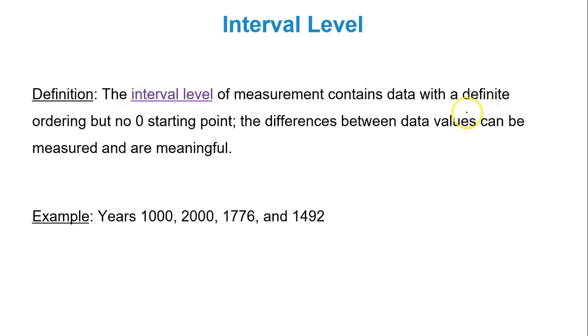Interval level of measurement. You have a definite ordering, but there's no zero starting point. So you could have negative numbers or you could have negative numbers that happen before zero. So the differences between data values can be measured and they are meaningful. So years, for instance, that's an example of an interval level of measurement. So the reason for this is because there's no zero starting point because before our A.D. years we had B.C. We had B.C., so there's no zero starting point. So 1000, 2000, 1776, 1492, those are all interval level.